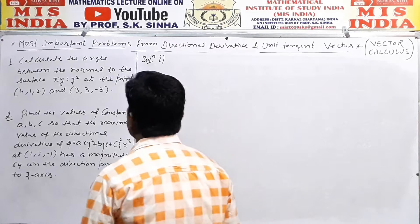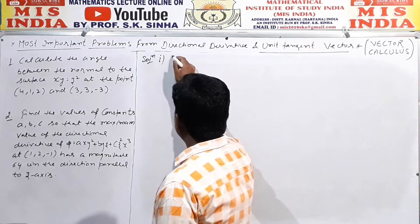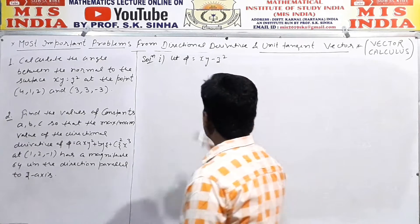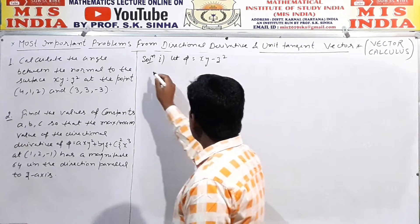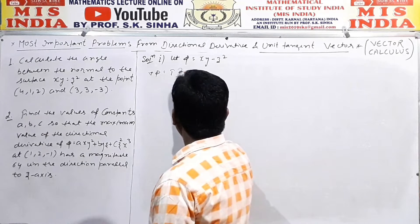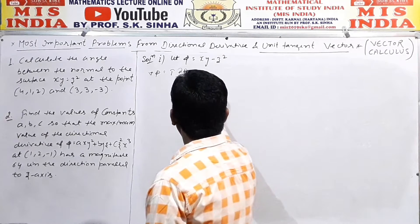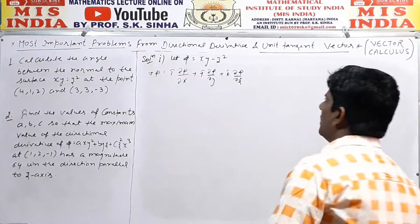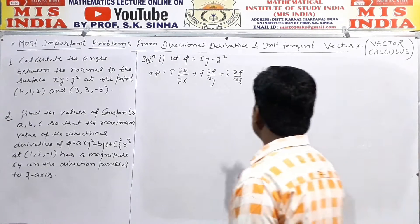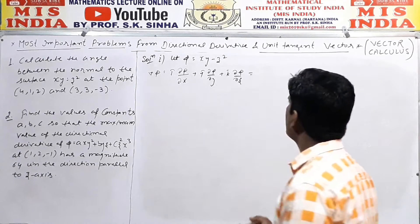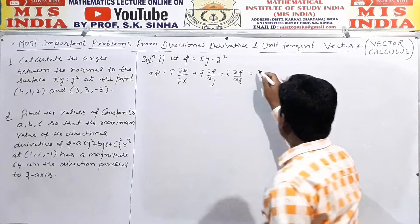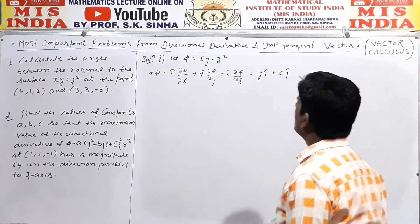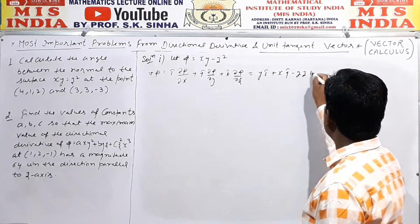Solution of question number 1. Let φ = xy - z². And ∇φ = i(∂φ/∂x) + j(∂φ/∂y) + k(∂φ/∂z). Finding the partial derivatives: with respect to x we get y·i, with respect to y we get x·j, and with respect to z we get -2z·k.